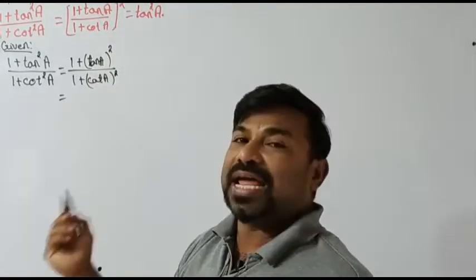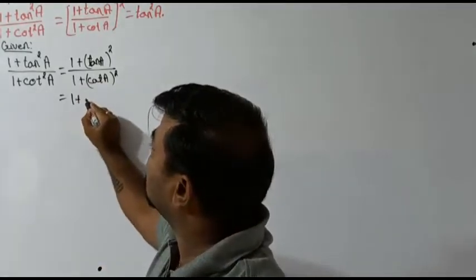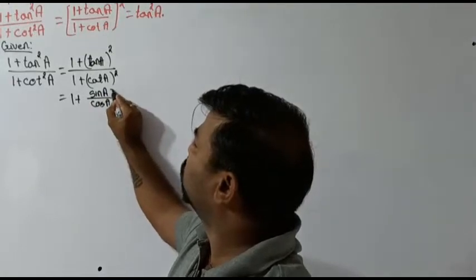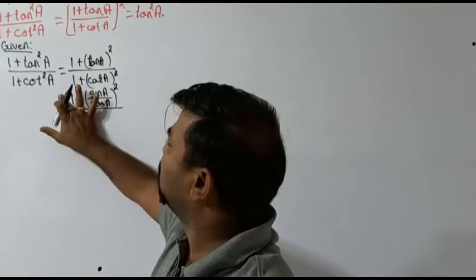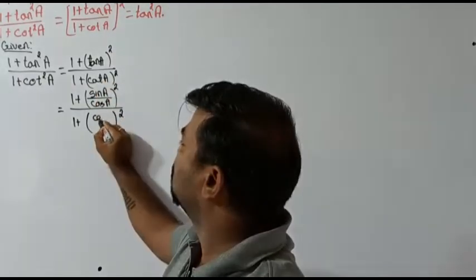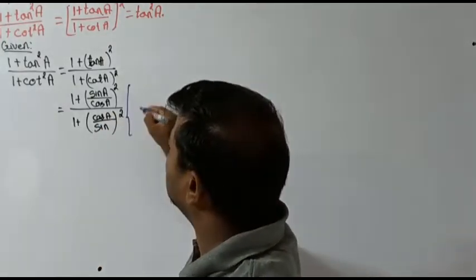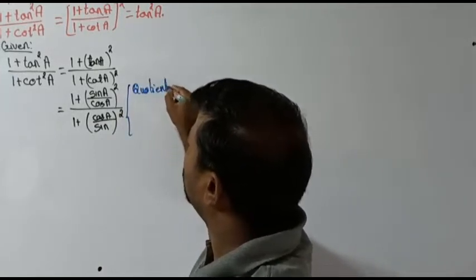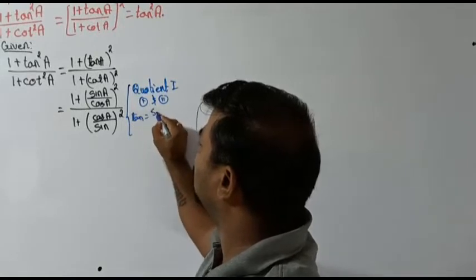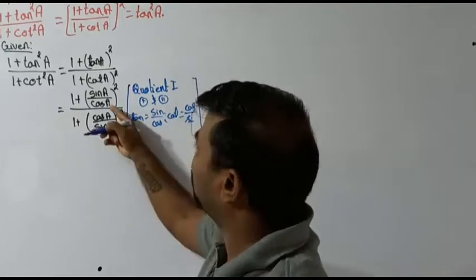With the help of the quotient identities, tan a equals sine a by cos a, and cot a equals cos a by sine a. So I write: one plus sine a by cos a, whole square, in the numerator, divided by one plus cos a by sine a, whole square, in the denominator.